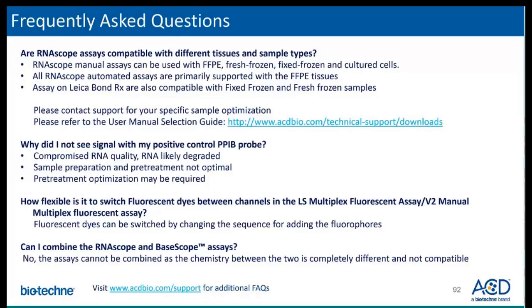How flexible is it to switch fluorophores and dyes between channels in the LS multiplex or multiplex V2 assay? The V2 assay gives you the flexibility to choose your fluorophore for different probes, meaning the opal dyes can now be switched by changing the sequence for adding the fluorophores. Can I combine the RNAscope and BaseScope assays? The answer is no — the assays cannot be combined as the chemistry between these two assays is completely different, which also means you cannot combine the probes from one with the reagents of the other.